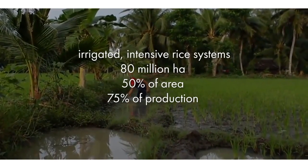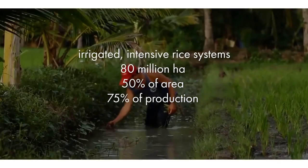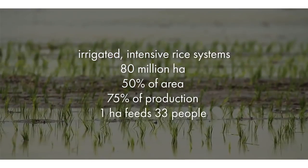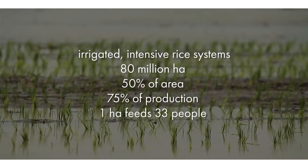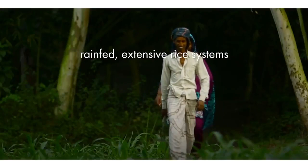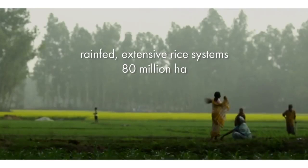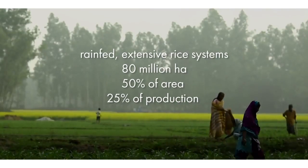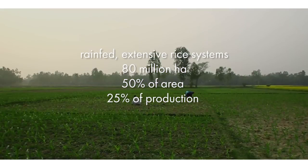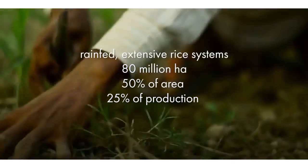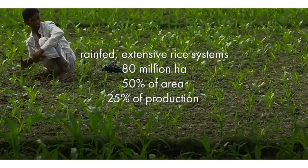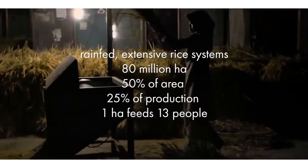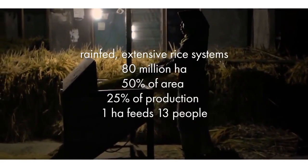The key feature of irrigated systems is adequate water control, meaning yields can be high, production is stable, and one hectare typically feeds more than 30 people. Then we have rain-fed, more extensively managed rice systems — another 80 million hectares — but they only produce about a quarter of the world's production, because there's often either too much or too little water. It's a risky production system, and a hectare of that kind of rice only feeds about 10 to 15 people.